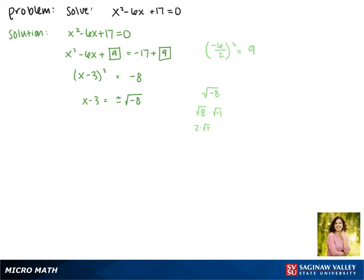This gives us 2 times the square root of 2 times i. Writing this a little bit neater, we'll write it as 2i times the square root of 2.